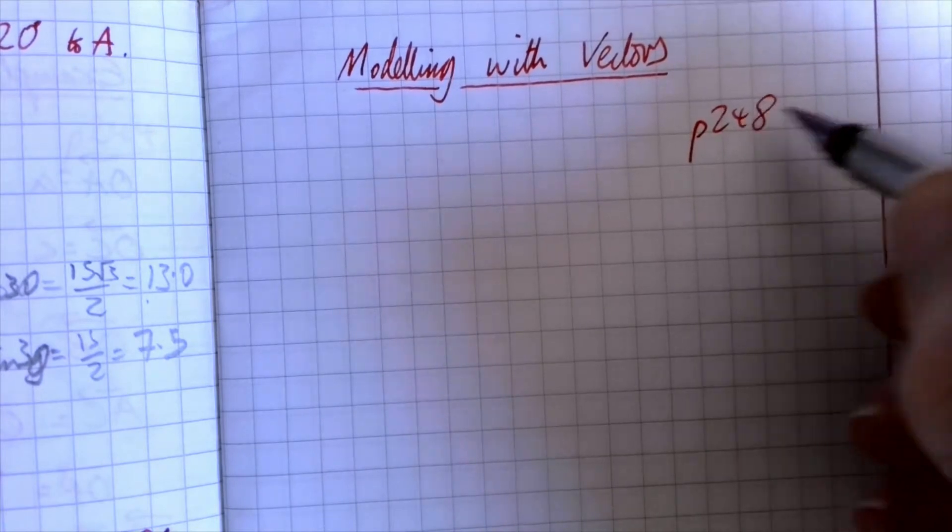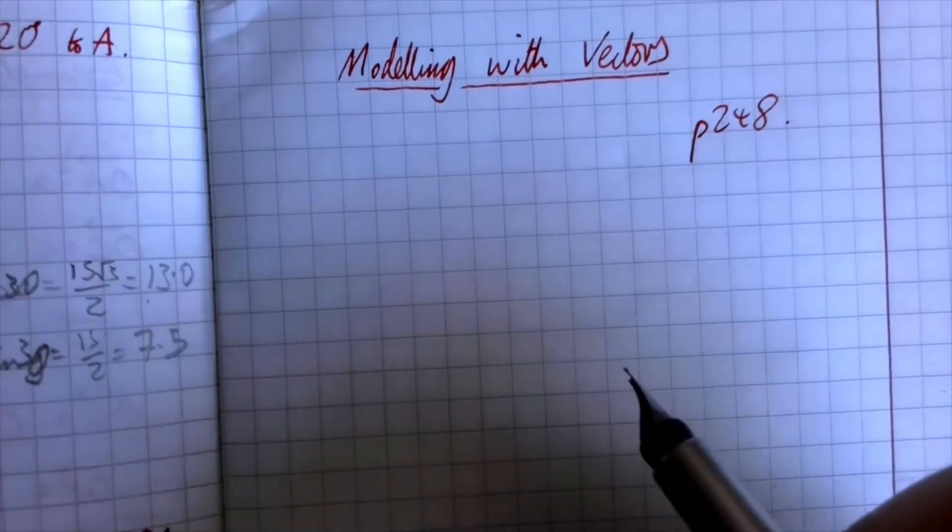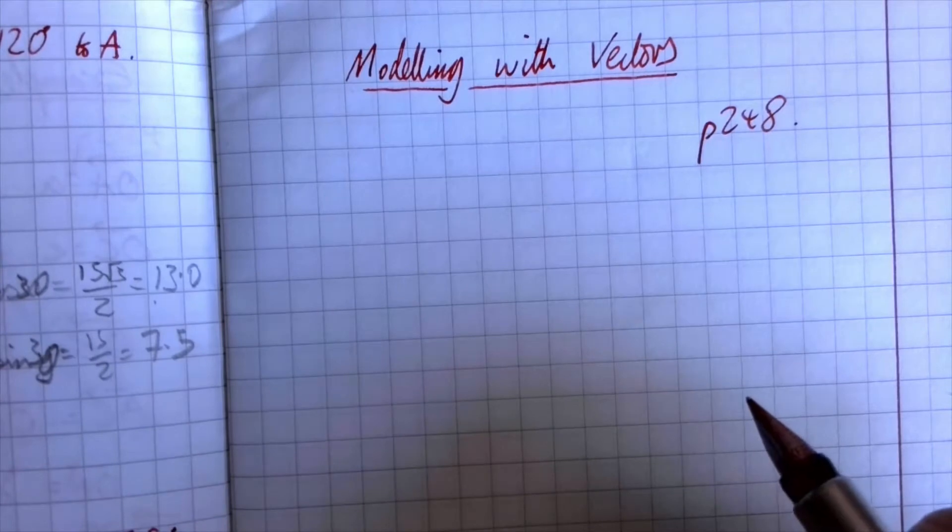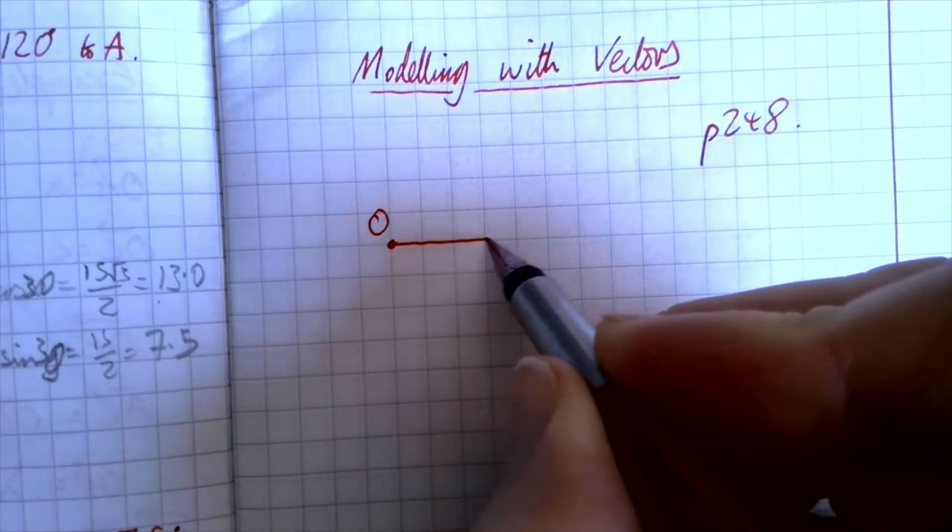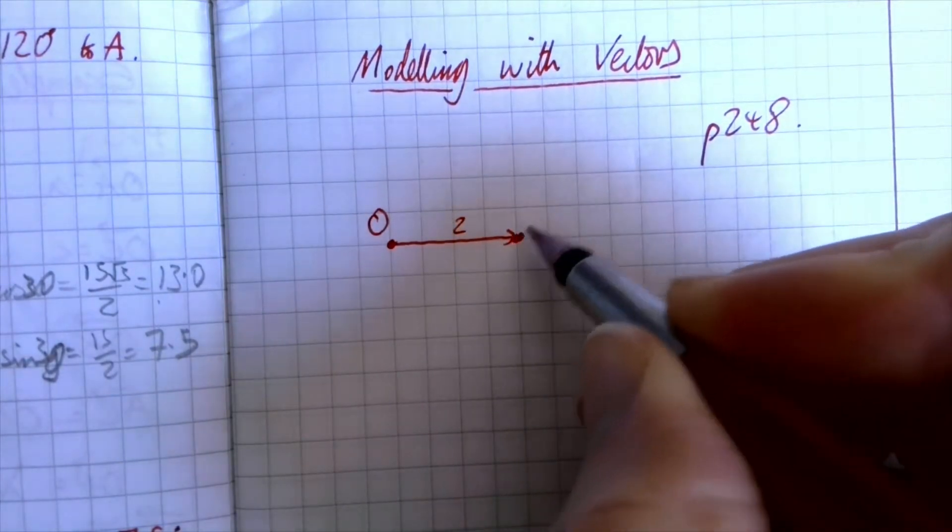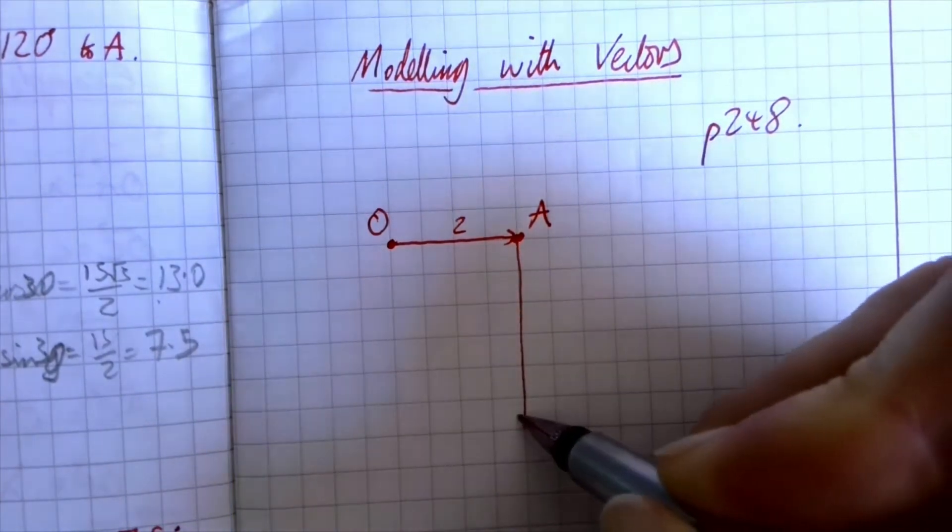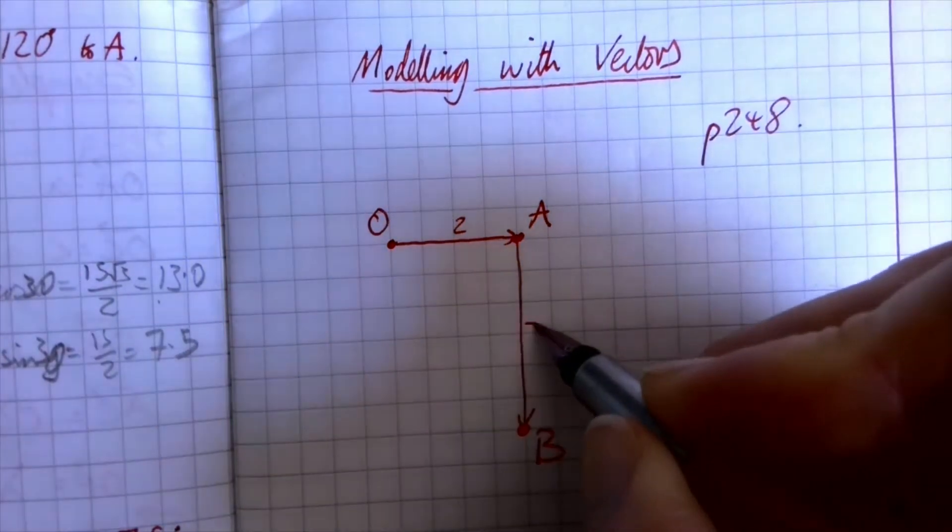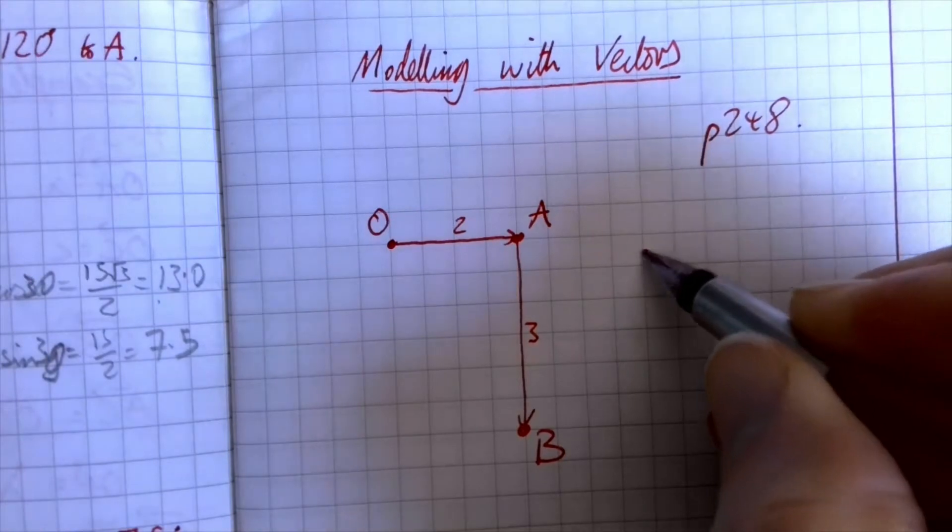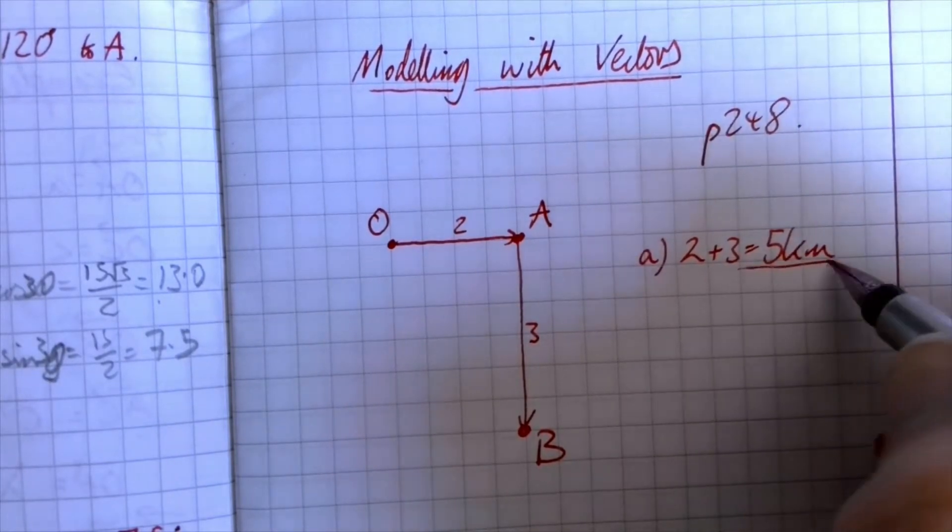So we're doing modelling vectors today. We're starting on page 248 with this example. We've got a girl walking two kilometres due east from point O to A. So O is there and we say two kilometres could be that far there to A. And then she's going three kilometres due south. So one, two, three to there and that is B. And we want to know what is the total distance travelled. Well that's pretty easy. So total distance is 2 + 3 = 5 kilometres.